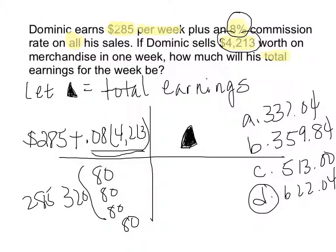To recap: $285 per week plus 8% commission on all sales. If he sells $4,213 in one week, how much are his total earnings? Let the pawn be the total earnings on one side, and on the other: $285 plus 0.08 times $4,213. Work through the math and you'll have it.